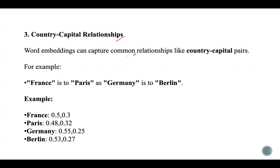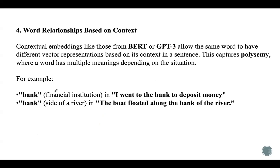The third type of relationship is country-capital relationships. Word embeddings can capture common relationships like country-capital pairs. For example, France is to Paris and Germany is to Berlin. In the vector space, you can see that Paris will be close to France and Germany will be close to Berlin, because Paris is the capital of France and Berlin is the capital of Germany.